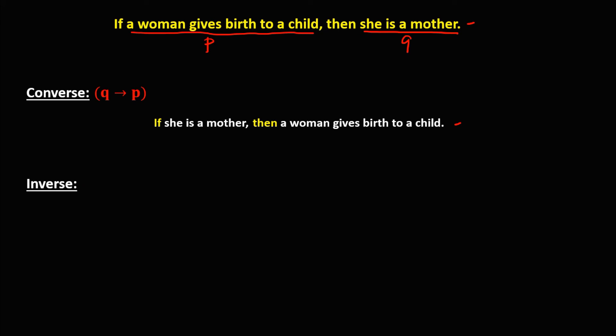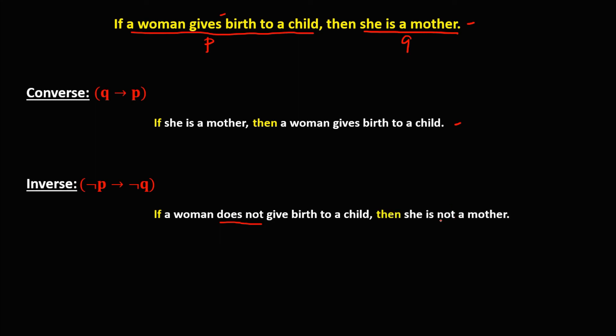For the inverse, that's the negation of P implies the negation of Q. So for the negation of P: if a woman does not give birth to a child, then for the negation of Q: she is not a mother. So this is now the inverse of this conditional statement.